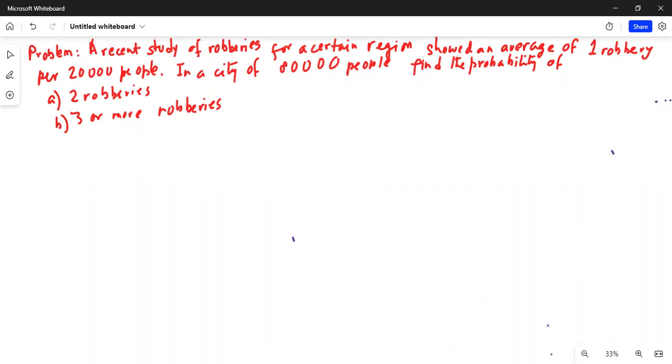A recent study of robberies for a certain region showed an average of one robbery per 20,000 people. In a city of 80,000 people, find the probability of two robberies, part A, and three or more robberies, part B.